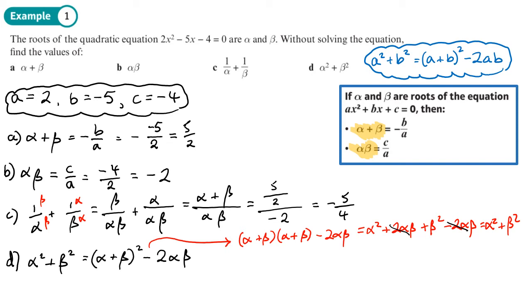Now we can replace our alpha plus beta with 5 over 2. So we've got 5 over 2 all squared minus 2 lots of the product, which is negative 2. That's 25 over 4 plus 2. If we add those together, 25 over 4, 2 is the same as 8 over 4.